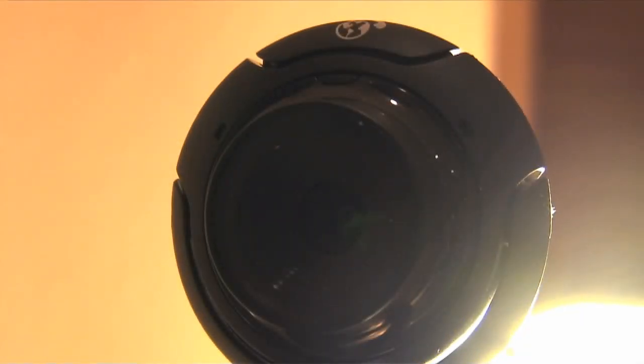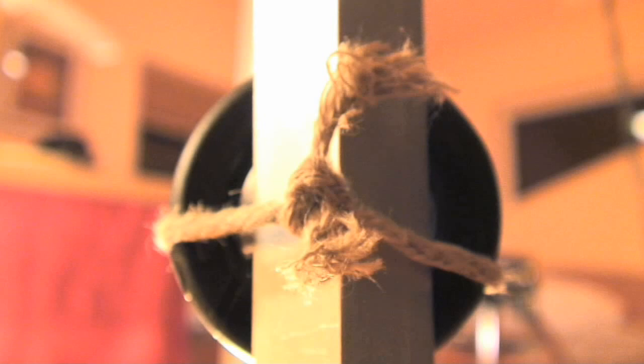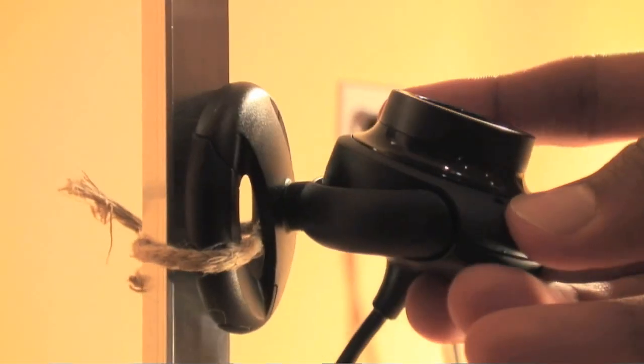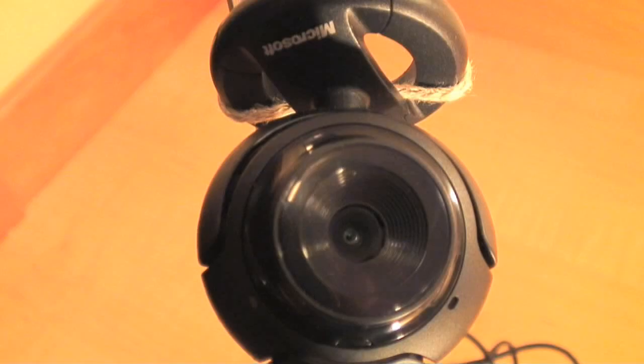With the modified web camera, we used a small piece of string to tie it onto one of the aluminum legs. You could also use glue or a zip tie. And then we pointed the lens towards our surface.